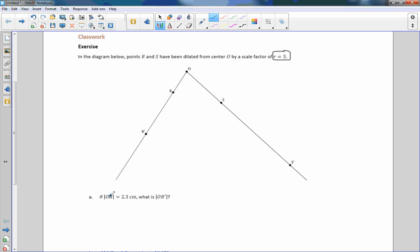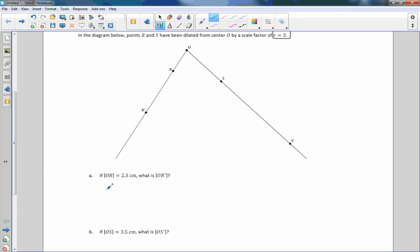So then down below, it says if OR equals the length of OR equals 2.3 centimeters, what is the length of OR prime? So I like setting these up like algebraic equations. So I'm going to say OR prime, which is what we're trying to find, equals our scale factor R times our original segment OR. So it's OR prime equals 3 times the length of OR.